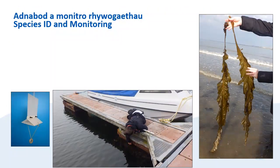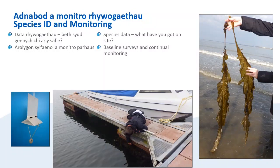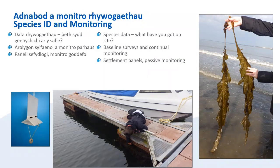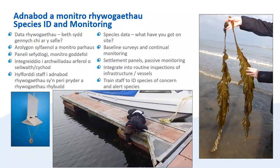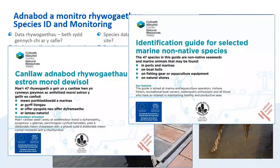Part of biosecurity is knowing what species you have at your site and keeping an eye out for any new species. This can be done by undertaking surveys to establish a baseline of species, then implementing continual monitoring strategies. Settlement panels, like the one in the left hand photo, are useful passive monitoring tools that can be put into the water at a site and checked every few months to see what fouling species are present. When carrying out routine inspections around sites, try to integrate visual inspections of infrastructure and vessel surfaces below the water line to look out for any fouling that looks out of the ordinary. Encourage staff to photograph and report unusual sightings. Provide staff and visitors with identification guides for key INNS. NRW has produced guides in both Welsh and English that are available as both digital and hard copies.